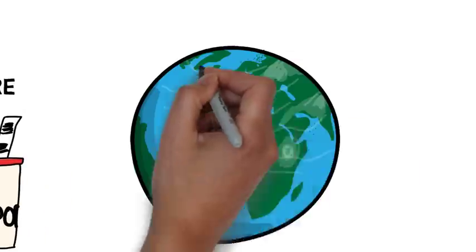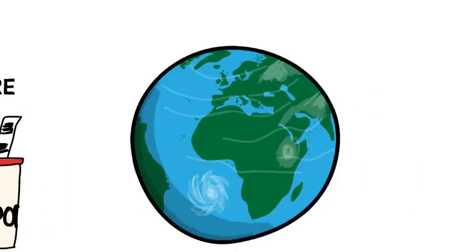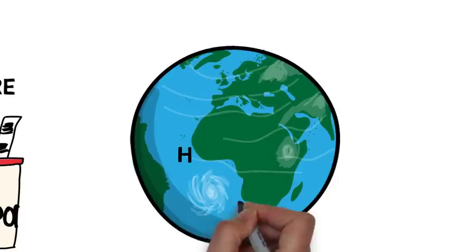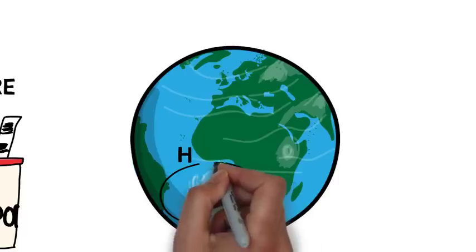So if you're watching the Weather Channel and you see a low pressure system above your house, that is not good. Because it means that the air is going to rapidly move towards your house. This is where a lot of hurricanes are formed.